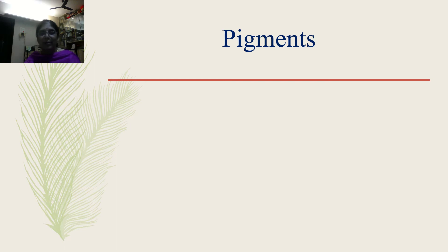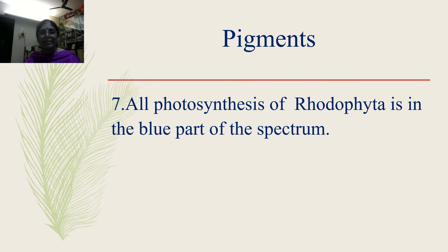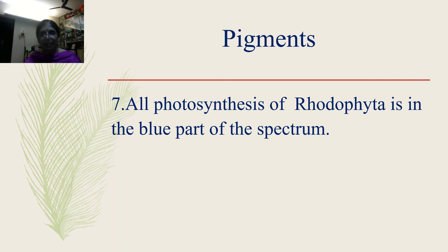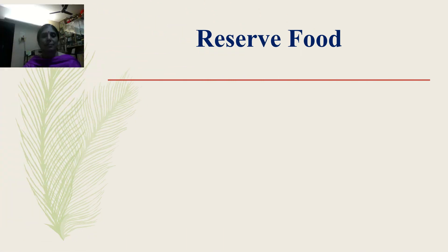So to summarize: chlorophyll A and D are present, B is absent; beta-carotene, lutein, r-phycoerythrin, r-phycocyanin, and xanthophylls are all present. Besides this, all photosynthesis of Rhodophyta — because they are present at different depths in the oceans and seas — occurs in the blue part of the spectrum.